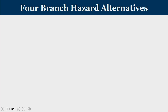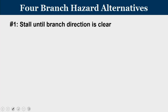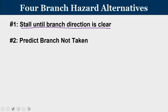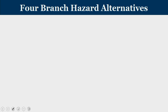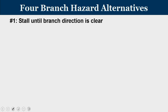While dealing with branches, there are four alternatives. The first is: the moment you detect a fetched instruction is a branch, stall until the branch direction is clear. The second approach is to predict that the branch is not going to be taken. The third approach is prediction that the branch will be taken, and the fourth is called the delayed branch approach. We will see them one by one. The first one — stall until branch direction is clear — is the most conventional and orthodox approach.